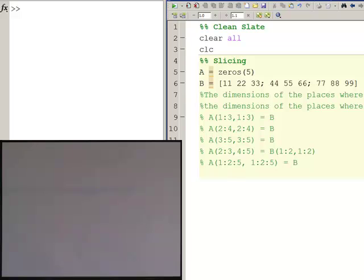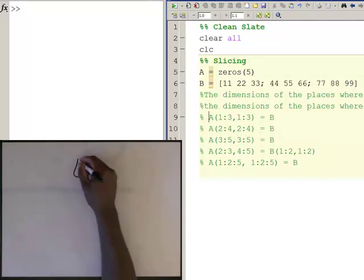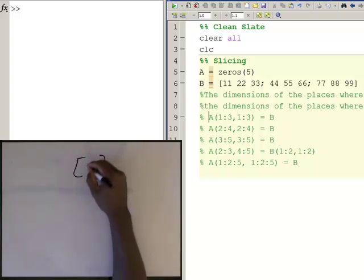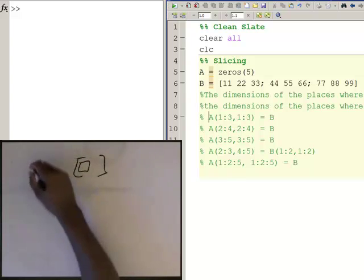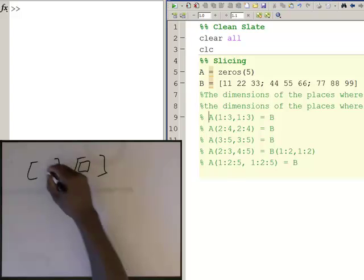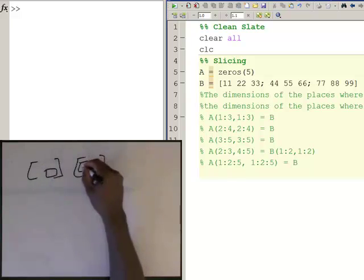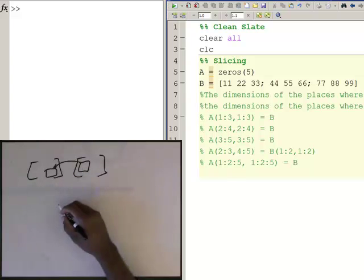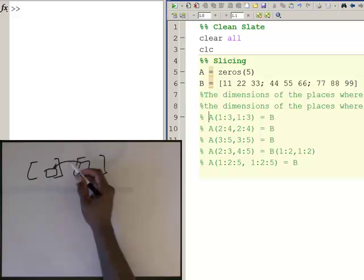In this video we're going to talk about slicing, which is taking parts from some array over here and putting it into some array someplace in some array over here. The thing is is that both of these pieces have to be the same size, so the part I'm slicing from has to be the same part I'm slicing to.